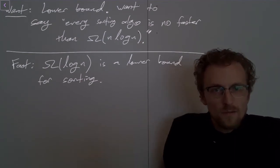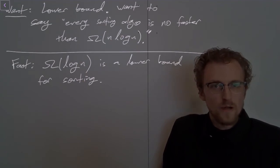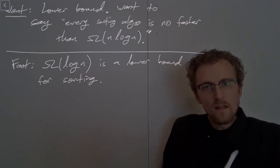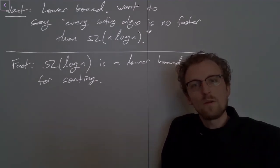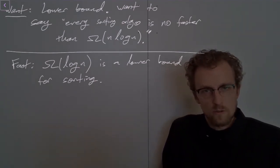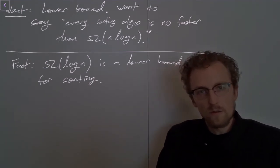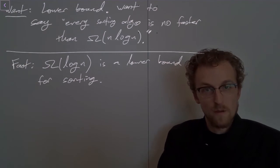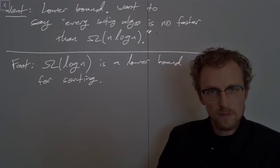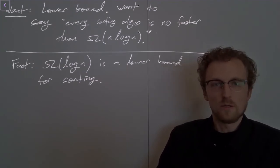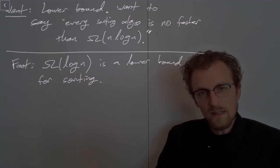What happens if an algorithm doesn't look at every element of the array? It might return an array that's not in order — the elements it's not looking at could be deliberately placed out of order, which means the algorithm could never sort all those numbers. So this is an incredibly uninformative lower bound. A logarithmic algorithm can't be looking at all the elements of the array, so it can't possibly sort them — but it is a lower bound.